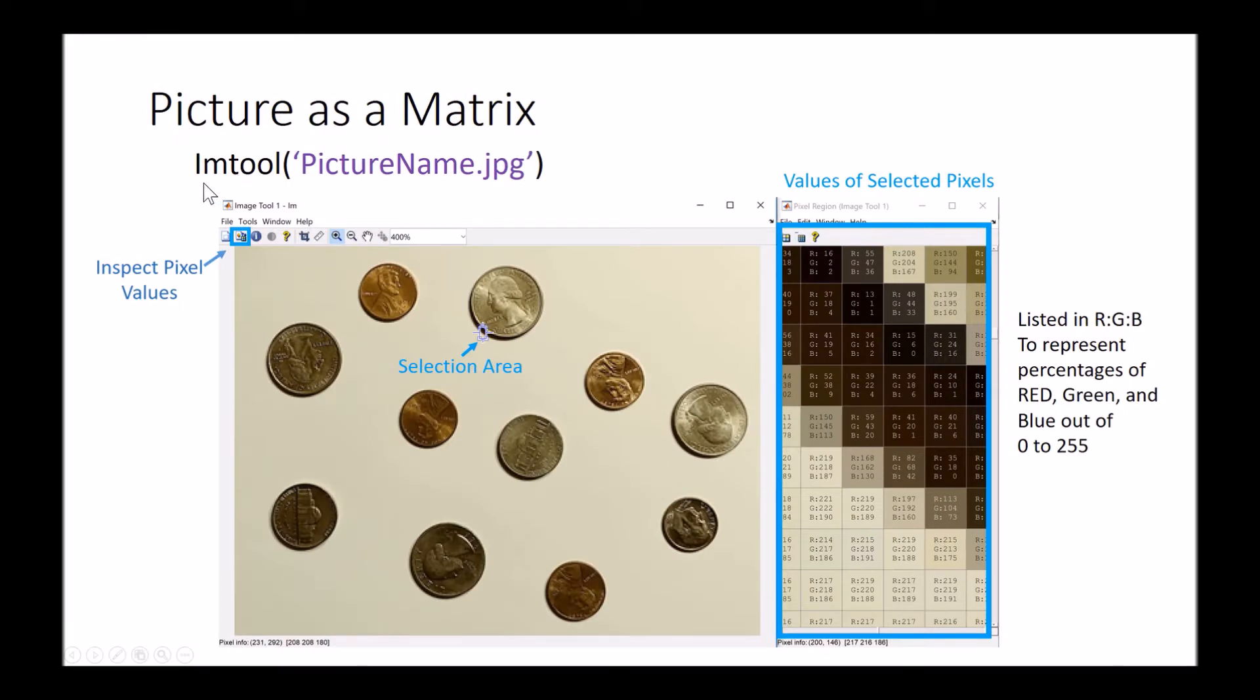What's then valuable though is that we can use imtool and pull in either our variable or our picture name and we can then inspect the pixels within it. So we're going to inspect the values and I can go in and see right here that I have an RGB image and we have a value between 0 and 255.